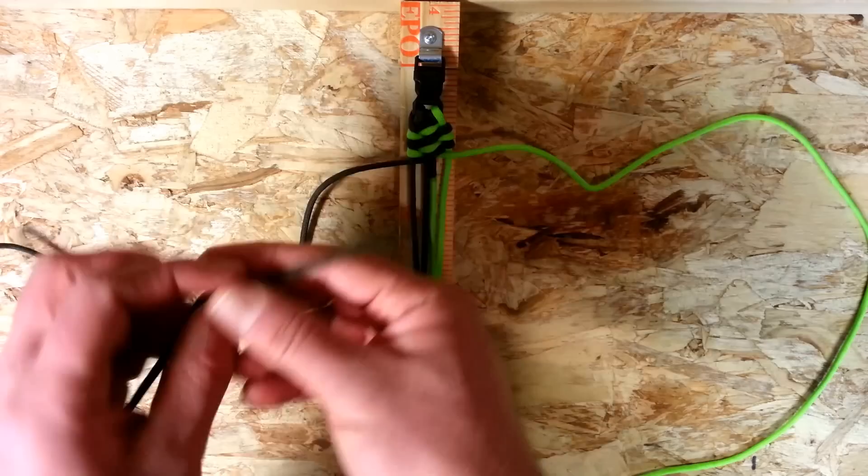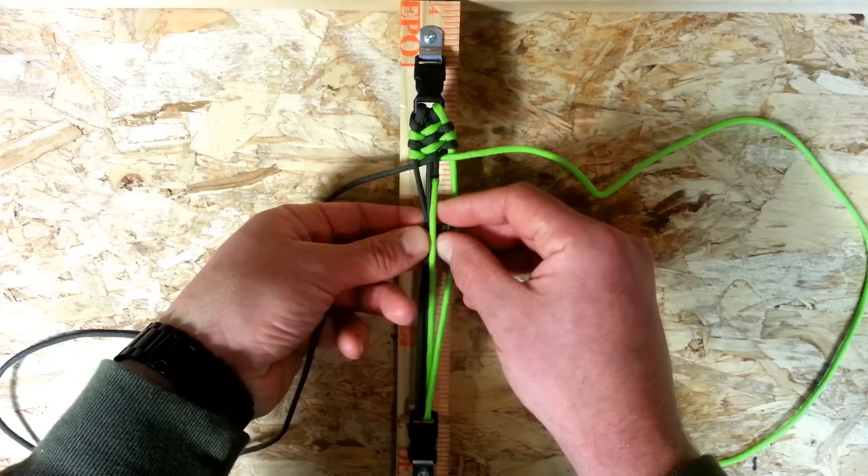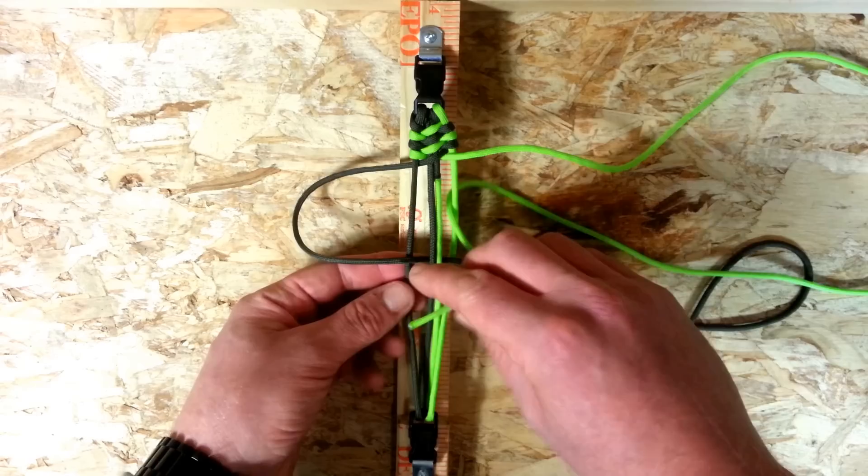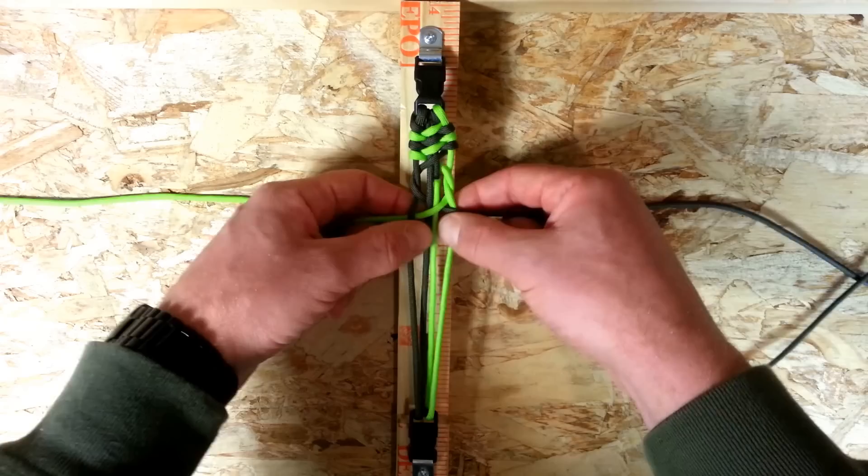Always starting from the left, over the first one, under the two middle core strands, over the right one. So your right hand cord, under the right hand strand, over the two middle, make sure you're below the cross piece of the left hand cord and then under the left. Simple as that.